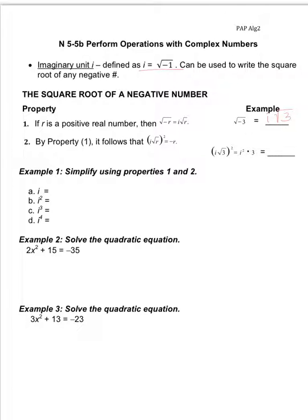Property 2 tells us that i times the square root of r, squared, equals negative r. For example, if we square i times the square root of 3, we get i squared times 3, because the square root of 3 times itself equals 3. Now, i is the square root of negative 1, so squaring it — square root of negative 1 times square root of negative 1 — gives us negative 1. So i squared times 3 gives us negative 3.